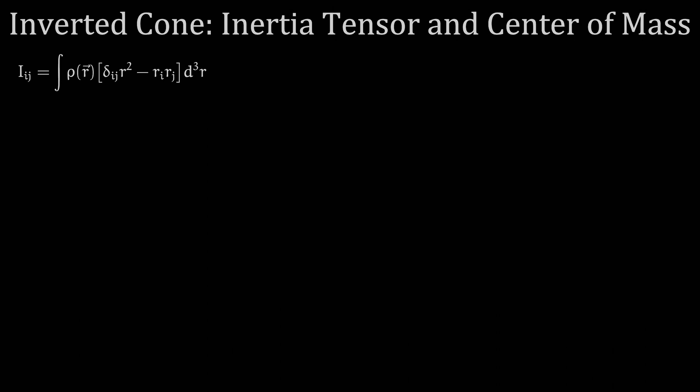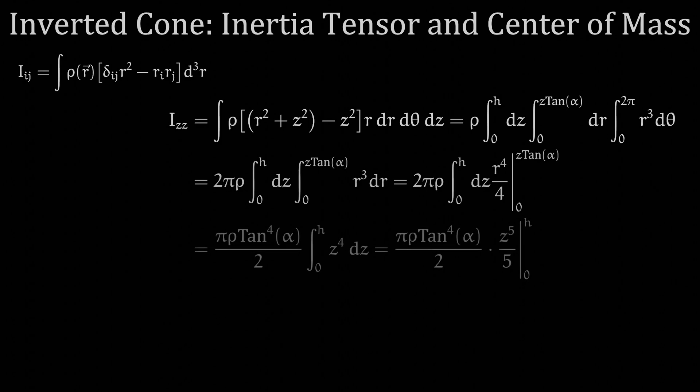Then there is only one element of the matrix left to calculate, Izz. The integration setup looks like this, which we solve right to left. After making substitutions for tangent of alpha and the density rho again, we have this simplified result for Izz.